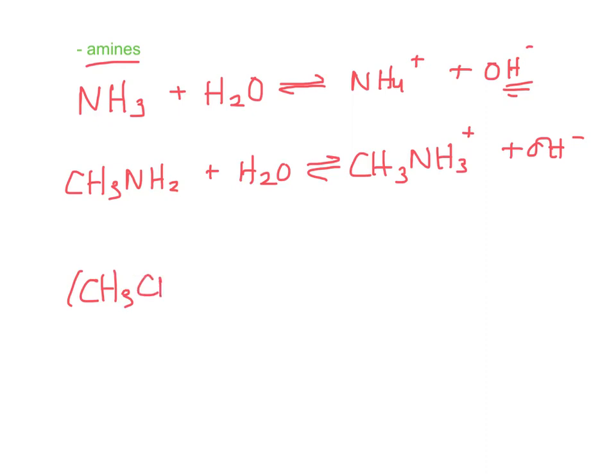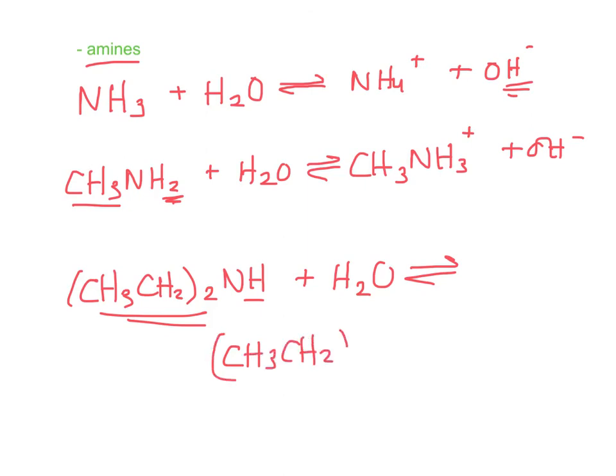Here's another bigger amine. Remember amines have nitrogen in them and like three things: three H's or a group and two H's or two groups and an H or just three groups. They don't really look like anything else we've learned, so they're pretty easy to find. So again, I write my amine and I'm going to add the H plus to the end of it. So NH becomes NH2 plus, plus OH minus.